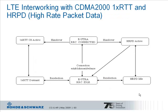Of course not only transitions from LTE to GSM-GPRS and wideband CDMA HSPA but also between LTE and CDMA 2000 based technologies is required. And this is true for both the HRPD high rate packet data and for 1x RTT circuit switched services. This figure again shows the allowed state transitions between RRC connected and the CDMA states and RRC idle and the CDMA states.